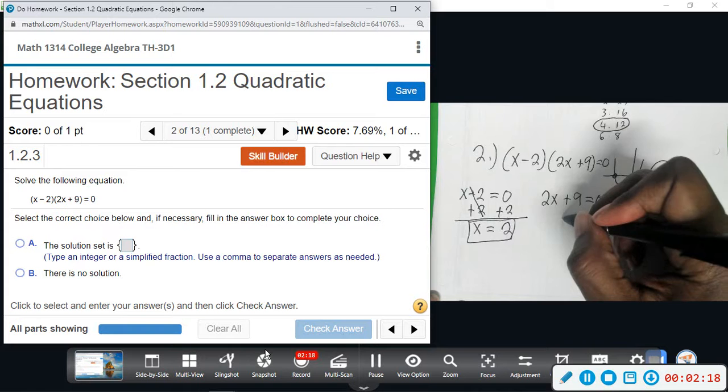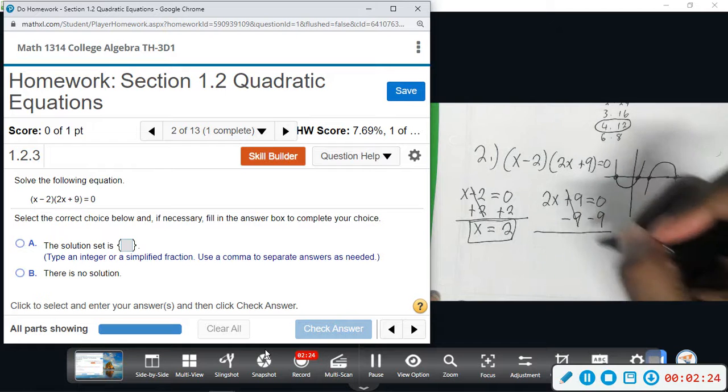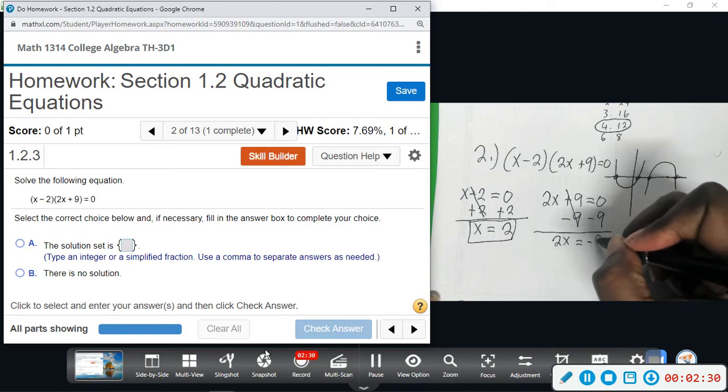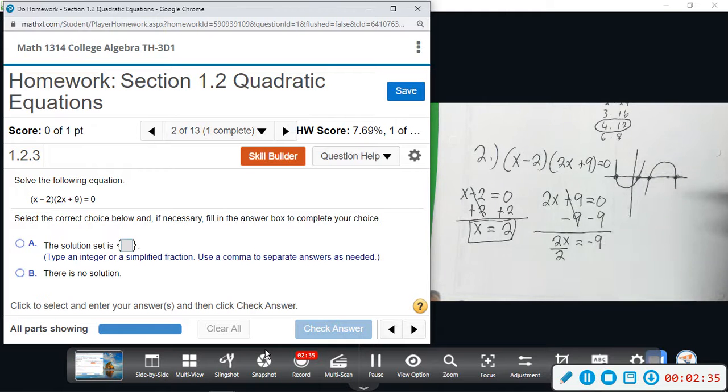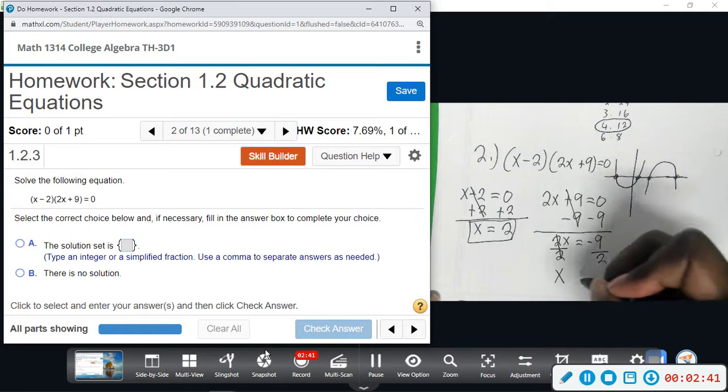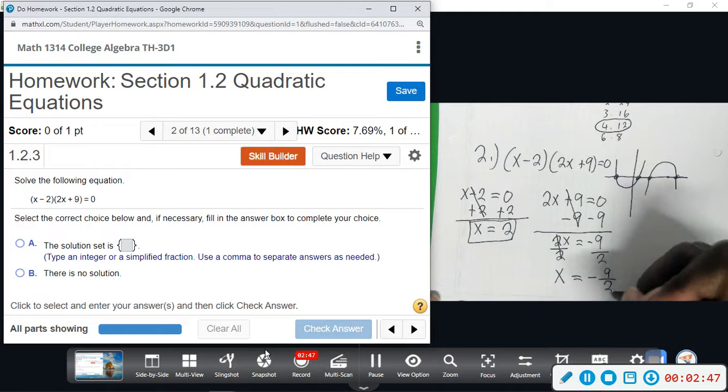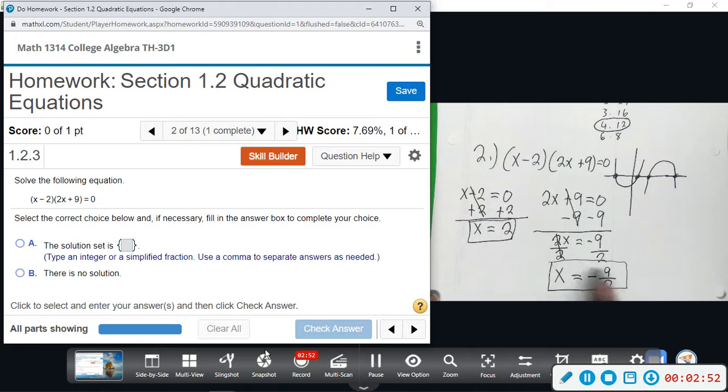All right, with the second one, we're going to subtract 9 from both sides. That goes to 0, bring down your 2x, bring down equals negative 9. And now we're going to divide by 2, divide by 2. 2 divided by 2 is 1, so we just have our x here. Equals, and we will leave this in fraction form, negative 9 divided by 2.